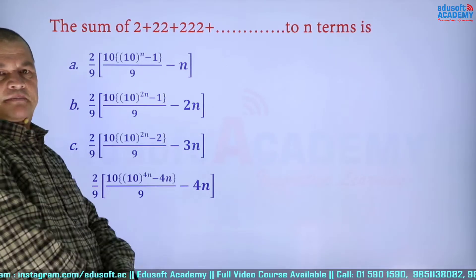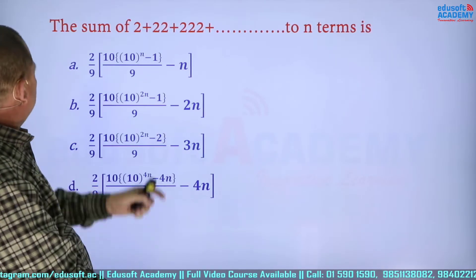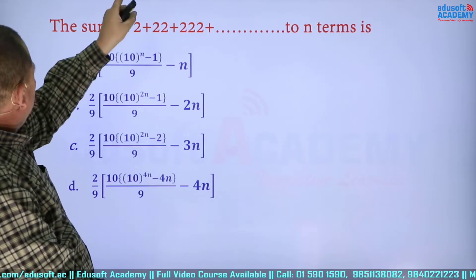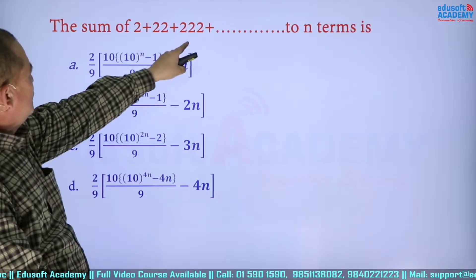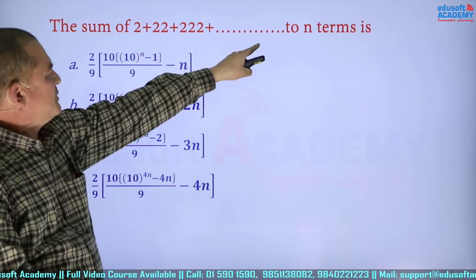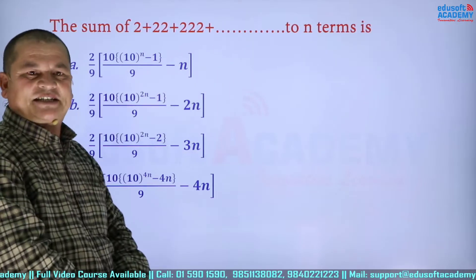Let us move to the third question. The sum of 2 + 22 + 222 + ... to n terms.